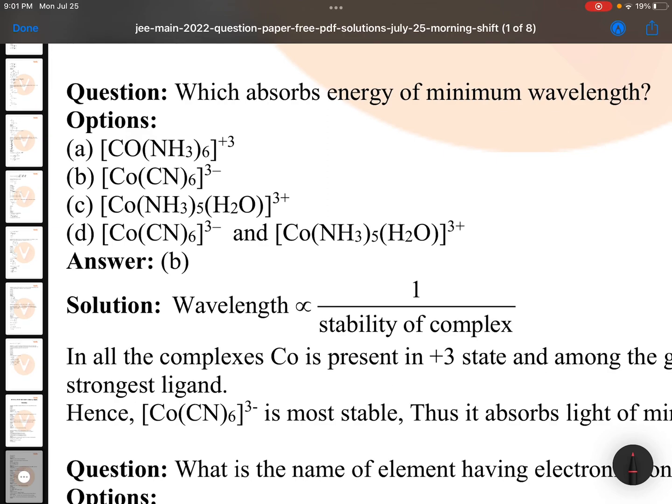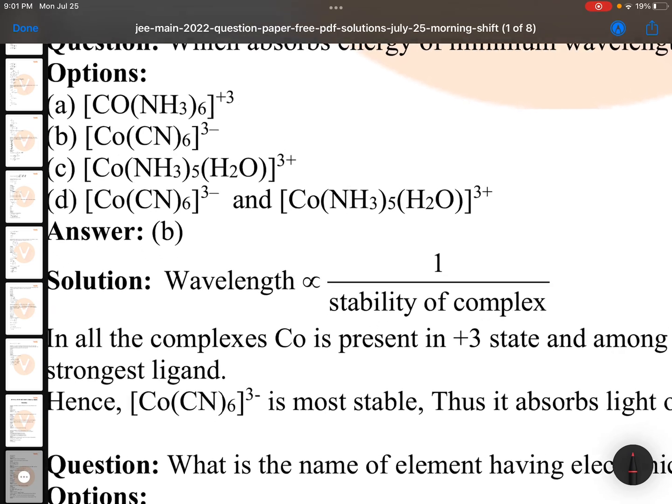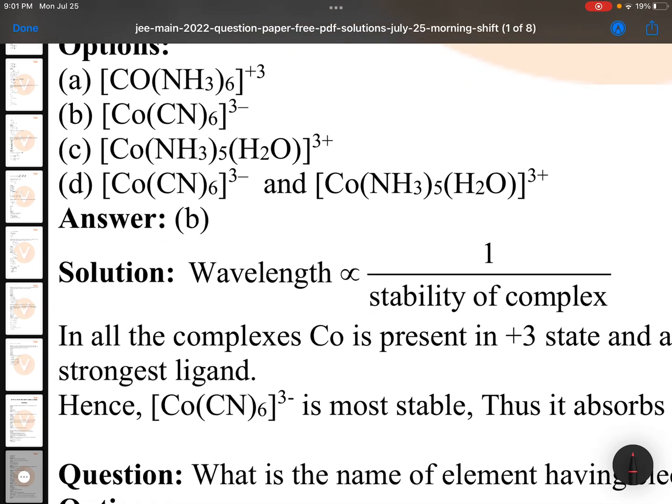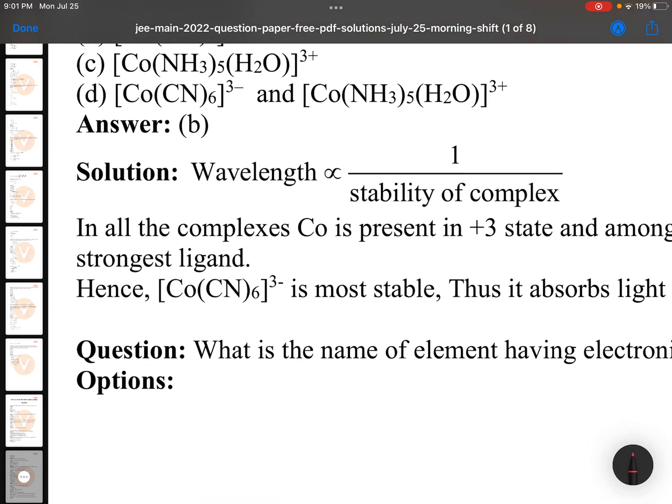Which absorbs energy of minimum wavelength? Wavelength minimum means maximum energy. That means wavelength is inversely proportional to stability of complex. Maximum stable is cyanide. So minimum wavelength is noticed for cyanide.